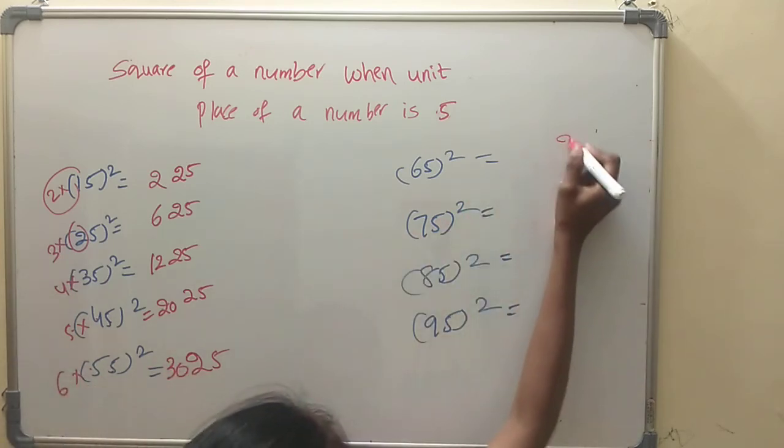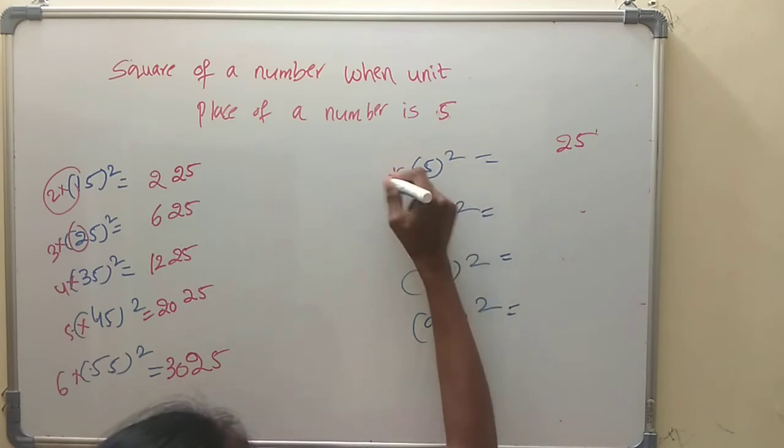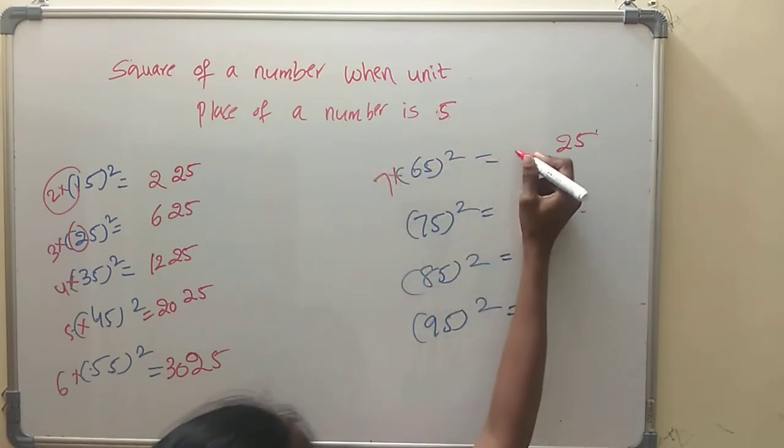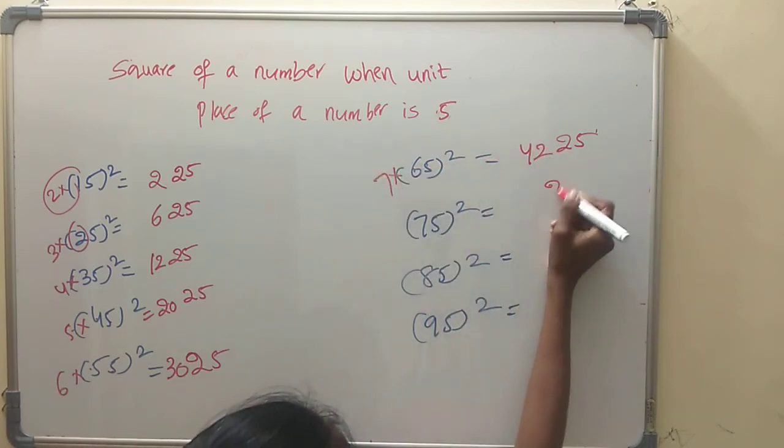Next, for 65 squared: tens digit is 6, next number is 7, 6 into 7 is 42, append 25. Result: 4225.